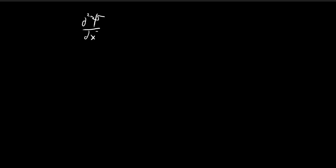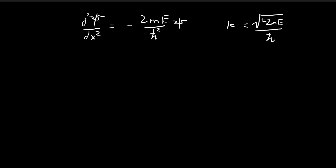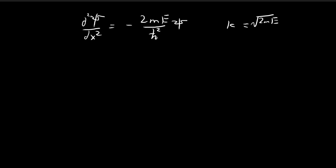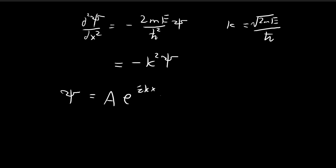Starting with the Schrödinger equation, we get something very similar to what we got when solving for E smaller than 0. Recall that last time we let a constant k equal to that expression with the negative inside, because E was smaller than 0. But now E is larger than 0, so we define k as the square root of 2mE divided by h-bar — without the negative sign, since E is already positive. This means the expression becomes negative k squared psi, and solving this differential equation gives psi equal to A times e to the power ikx plus B times e to the power of negative ikx.